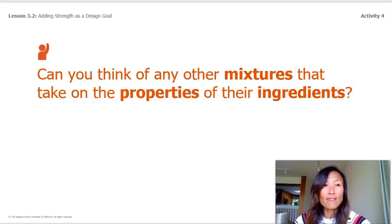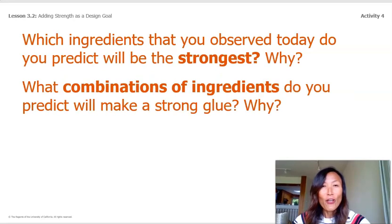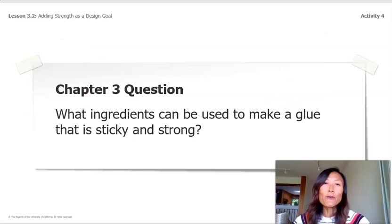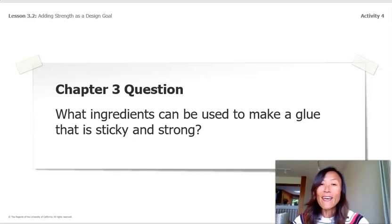Can you think of any other mixtures that take on the properties of their ingredients? Which ingredient that you observed today do you predict will be the strongest and why? What combinations of ingredients do you predict will make a strong glue and why? Pause the video and make your predictions. Let's go back to our chapter three question: What ingredients can be used to make a glue that is sticky and strong? We'll spend the rest of the chapter figuring out an answer.